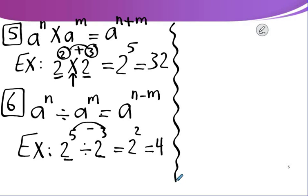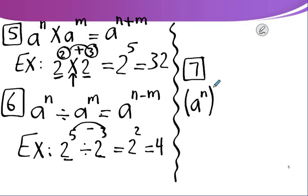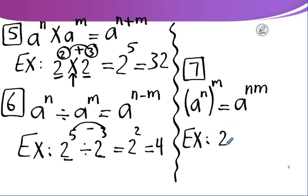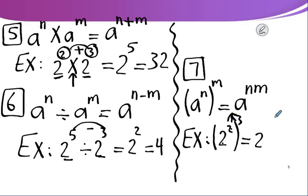Rule number 7, and the last one: A to the power n, all to the power m, equals A to the power (n × m). For example, 2 to the power 2, all to the power 3: multiply the powers. It will be 2 to the power 6. These are our rules for the powers.